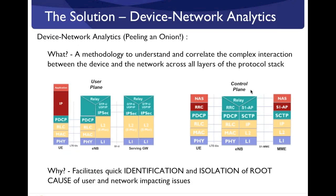As an analogy, device network analytics is like peeling the different layers of an onion. If you take the traditional LTE protocol stack, it has different layers — the physical layer, MAC layer, RLC layer, PDCP layer, and so on. The elements that are part of this device network interaction, like the UE and the eNodeB, have all of these different protocols working with each other to deliver a great user experience to the end consumer — whether it's making reliable connections or getting the best data speeds. Device network analytics is a methodology to understand this complex interaction across all layers of the protocol stack.